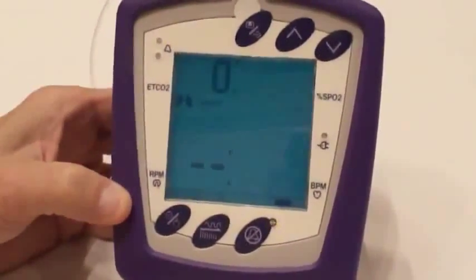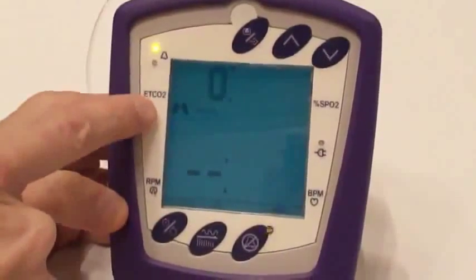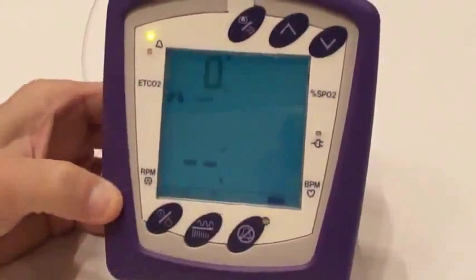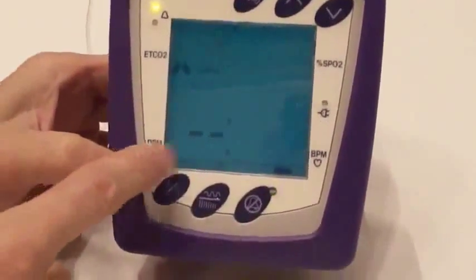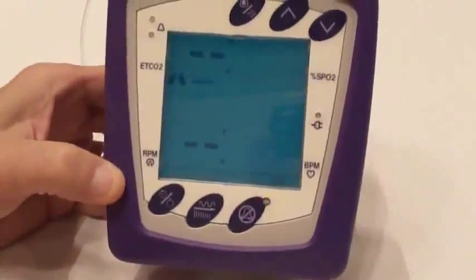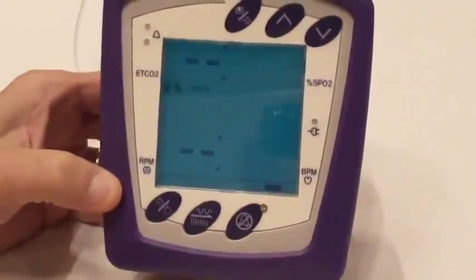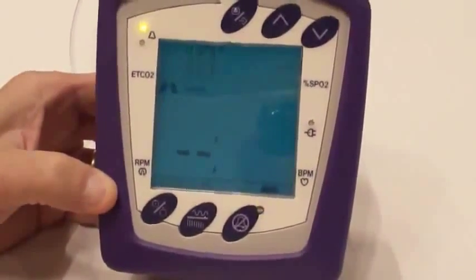As you can see there up top here you have where you're going to be monitoring your End-tidal CO2 through the nasal cannula. Then down here will be your respirations per minute. Should start getting a reading here pretty quickly. There we go.